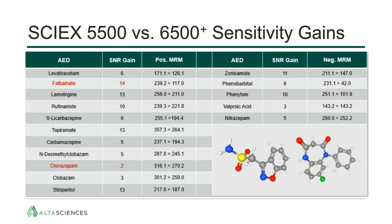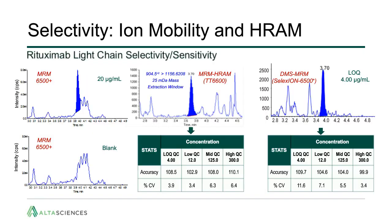Two solutions used to overcome selectivity challenges include accurate mass filtering or differential mobility spectrometry to separate analyte from interference based on physical cross-section prior to mass selection. This approach reduces the achievable LOQ for the light chain of rituximab over five-fold compared to traditional MRM on a 6500-plus, either through measurement of the exact mass of the progeny ion on a TripleTOF 6600, or by differentiation of ion mobilities using the SelexION device.